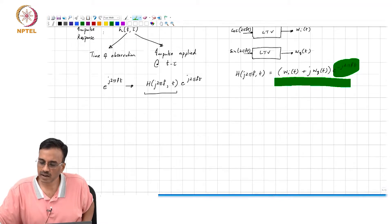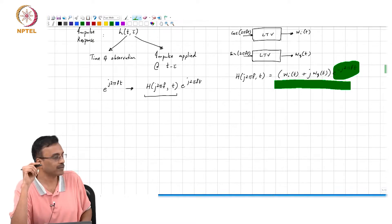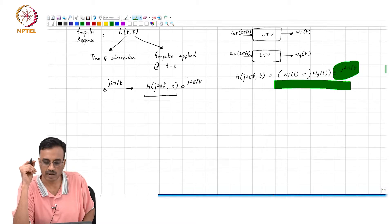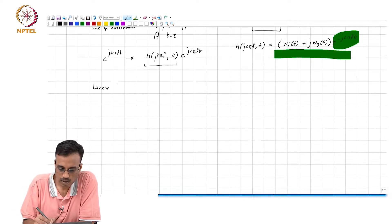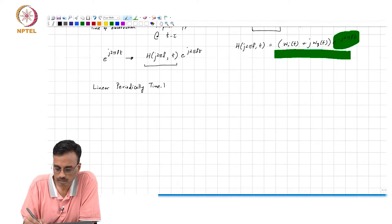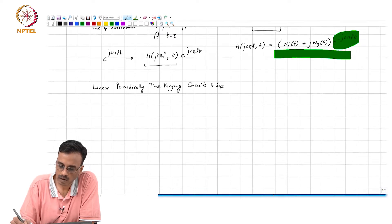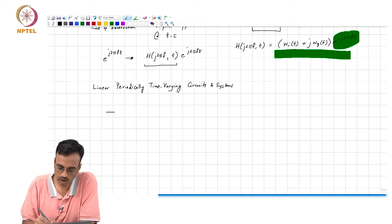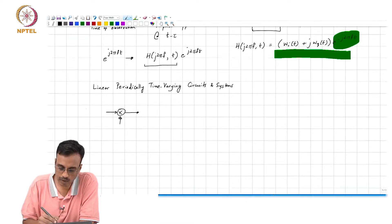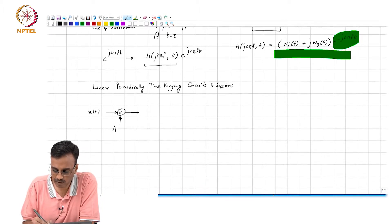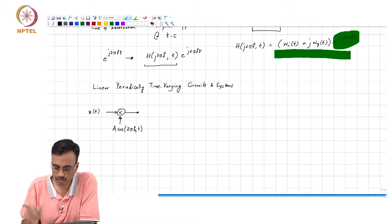Now, it turns out that in practice, what is of most relevance is a class of systems called linear periodically time varying circuits and systems. We have seen an example already of what practical utility such a system has. This is an example of a multiplier, where you have x of t and you multiply it with some a cos of 2 pi f_s times t.